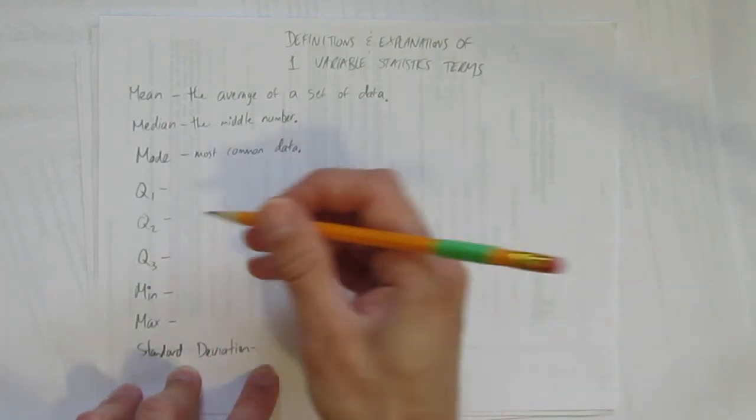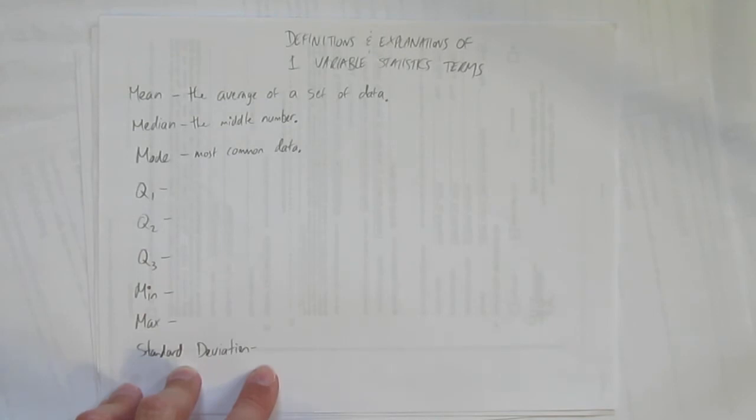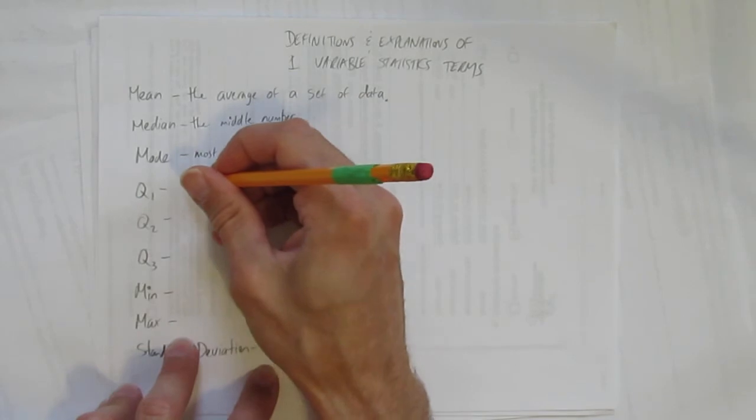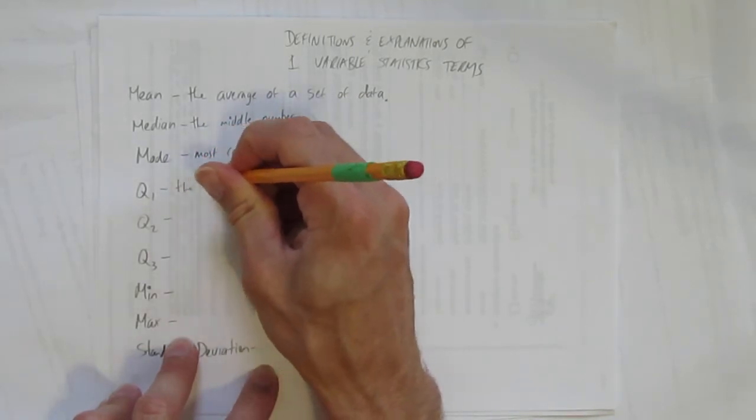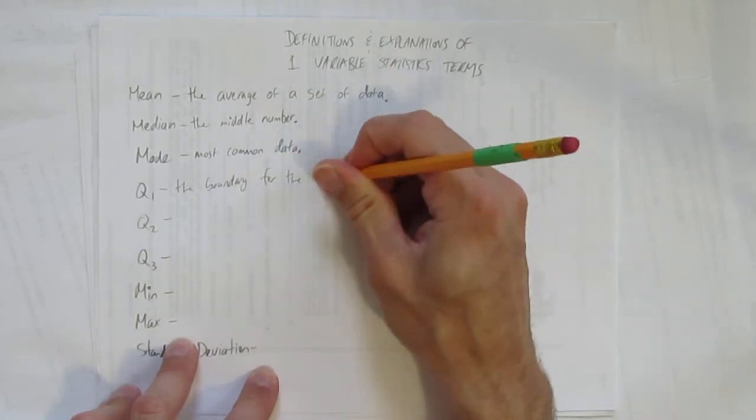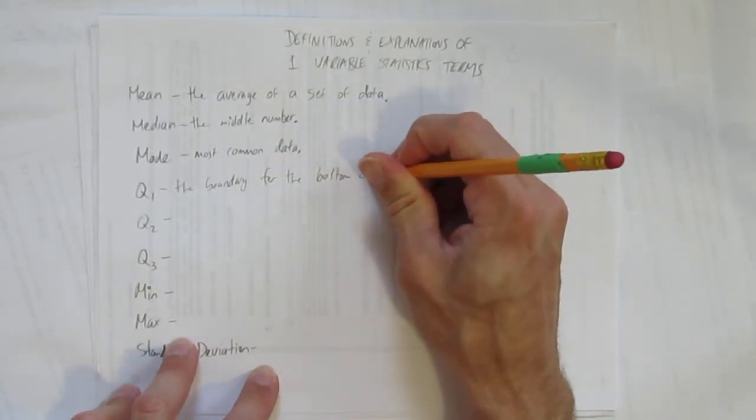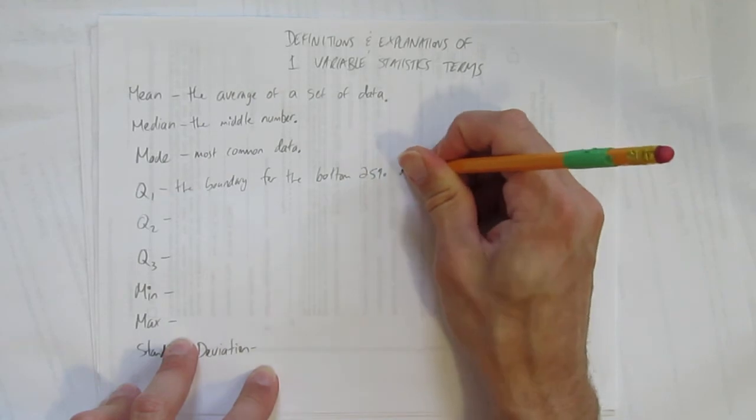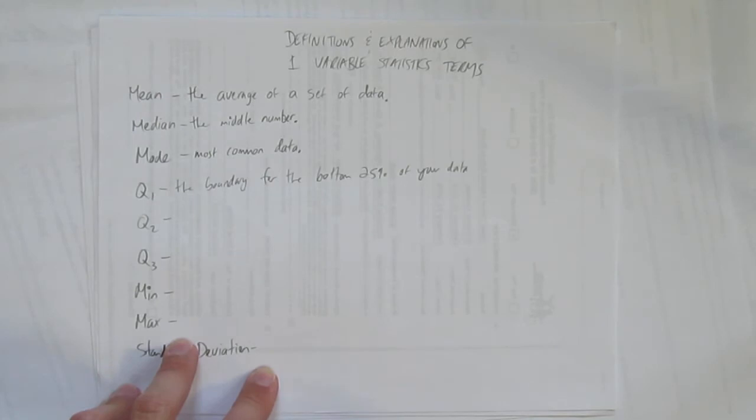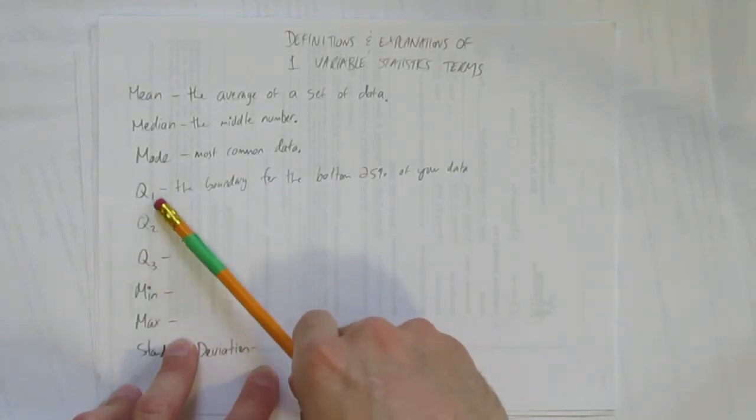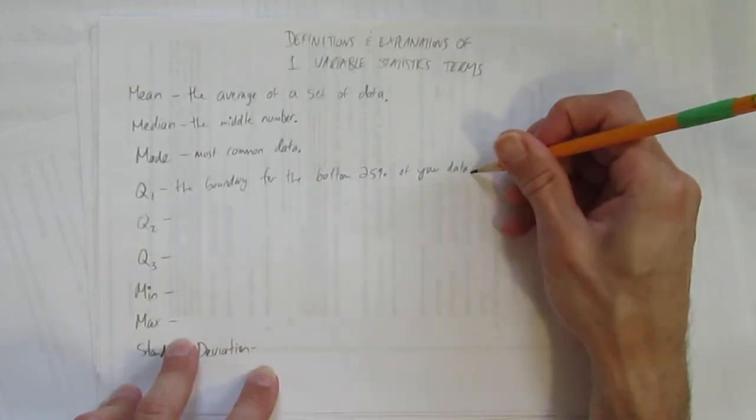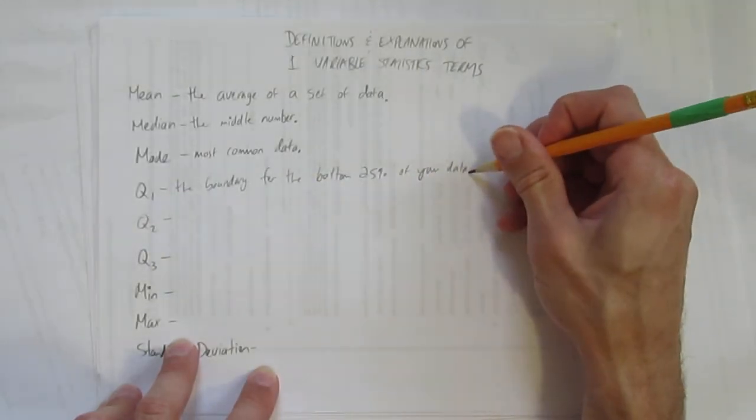What's Q1? I mean, there's a lot of ways to understand the quartiles, Q1, Q2, Q3, but we'll keep it nice and simple. Q1 is the boundary for the bottom 25% of your data. You separate your data into four quarters, and there are three boundaries. This first boundary separates the bottom quarter. That's your Q1. It's the boundary for the bottom 25% of your data.